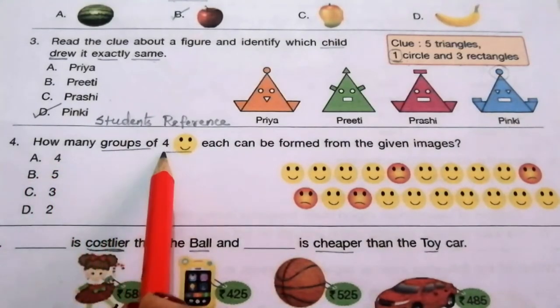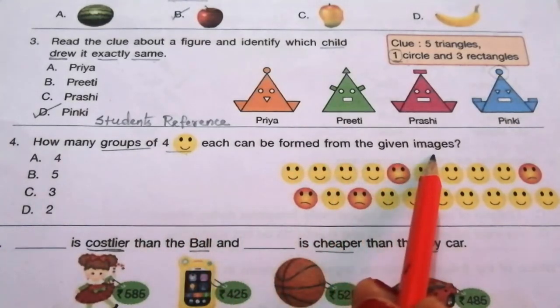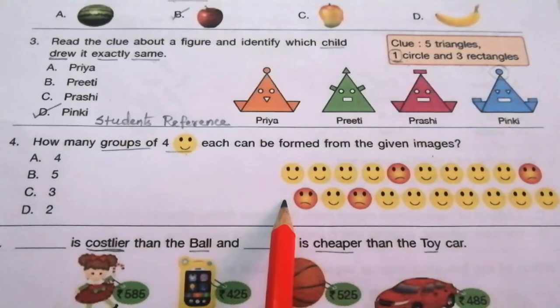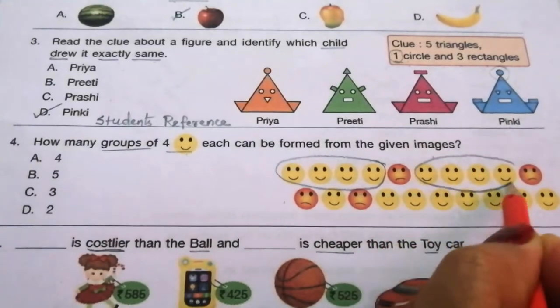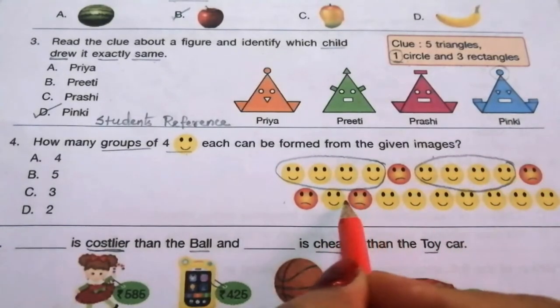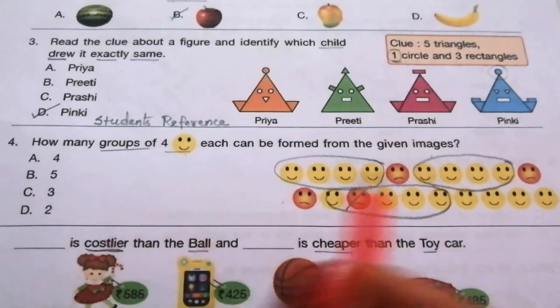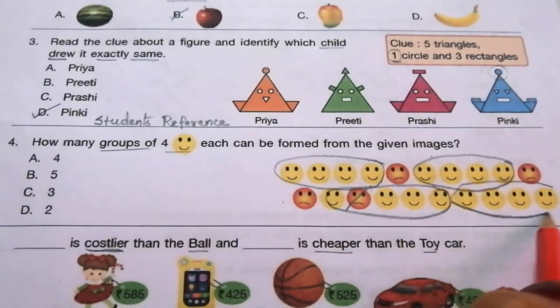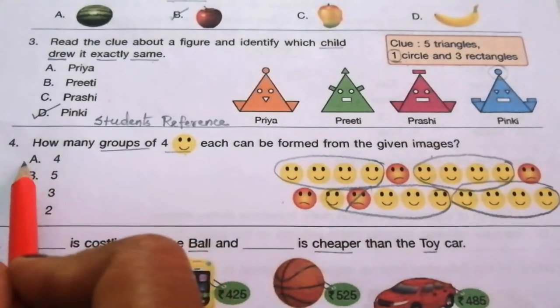Question 4: How many groups of four smileys each can be formed from the given images? Look at the given picture. We have to group four: one, two, three, and four. So the answer is A, four.